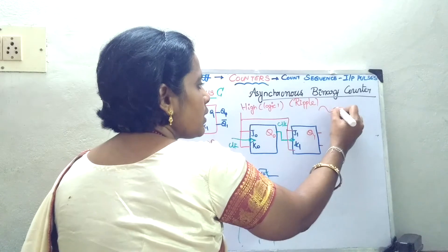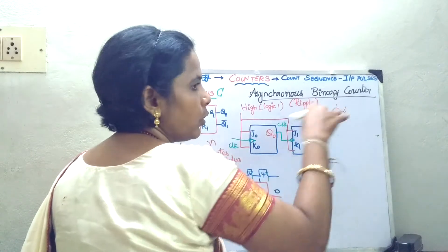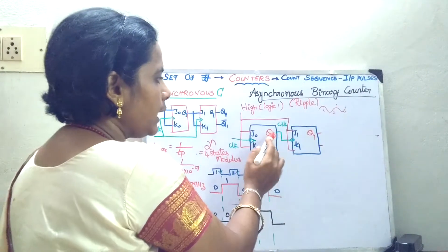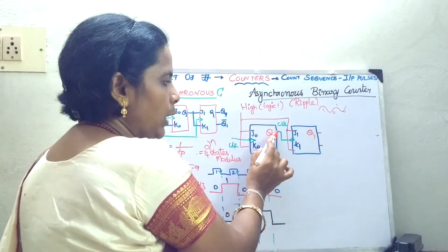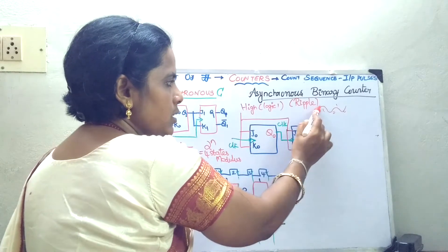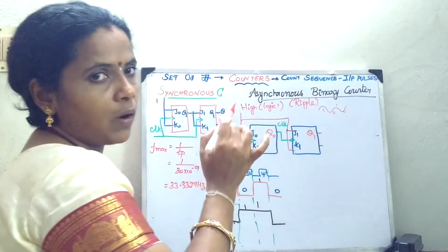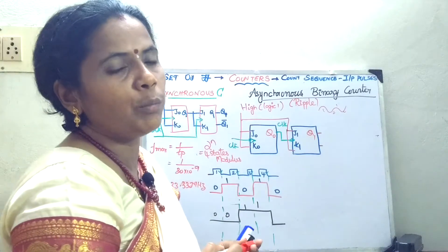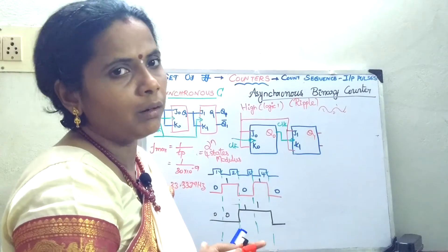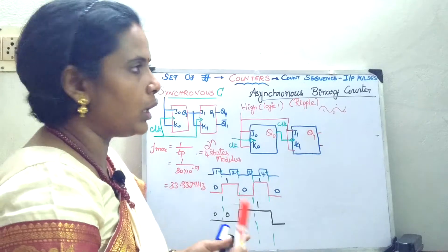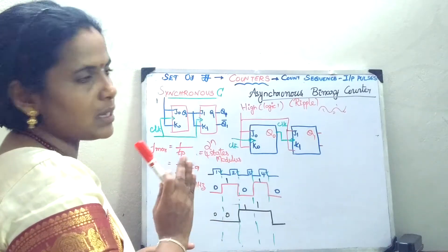The synchronous counter will require minimum propagation delay because all flip-flops are going to be clocked at the same time. Whereas in the asynchronous counter, only when the output is ready — after some nanoseconds of time delay — can it reach the second flip-flop. So there will be more propagation delay in the asynchronous counter. This asynchronous counter is also called the ripple counter, just like ripples in water — the data passes to the next stage after some time delay.